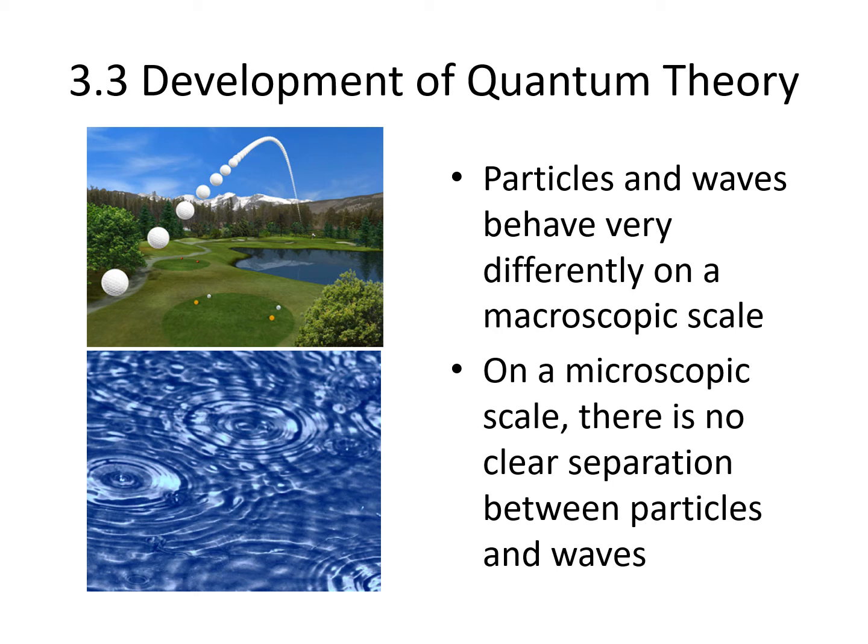Classical mechanics works best on a macroscopic scale, where particles and waves behave very differently from each other. We can use an equation to describe the parabolic arc of a golf ball through the air. A very different equation would be used to describe waves in a pond.